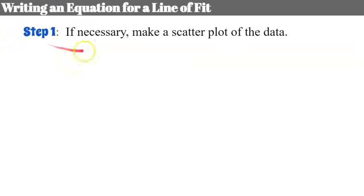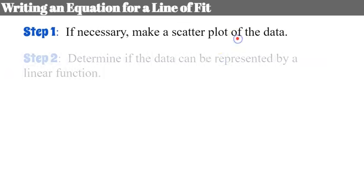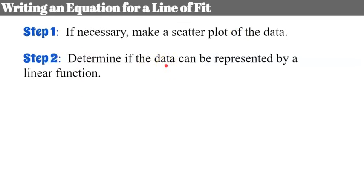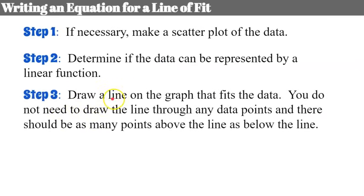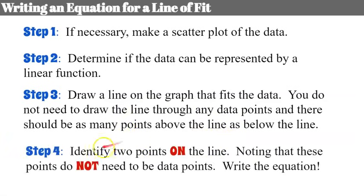Let's practice writing an equation of a line of fit. Step one: if necessary, make a scatter plot of the data. Step two: determine if the data can be represented by a linear function. Step three: draw a line on the graph that fits the data — you do not need to draw through specific data points, and there should be as many points above your line as below. Finally, identify two points on your line — they may or may not be data points. From those two points, find the slope and use point-slope or slope-intercept form to write the equation.